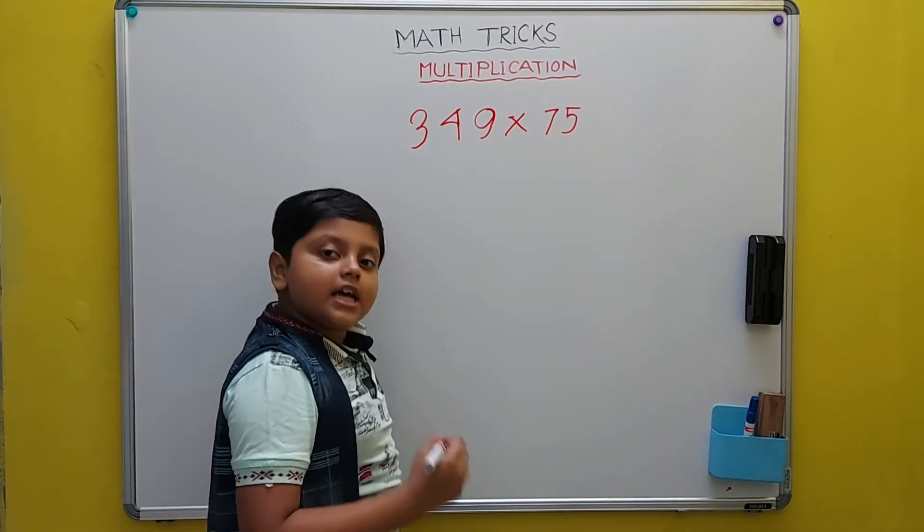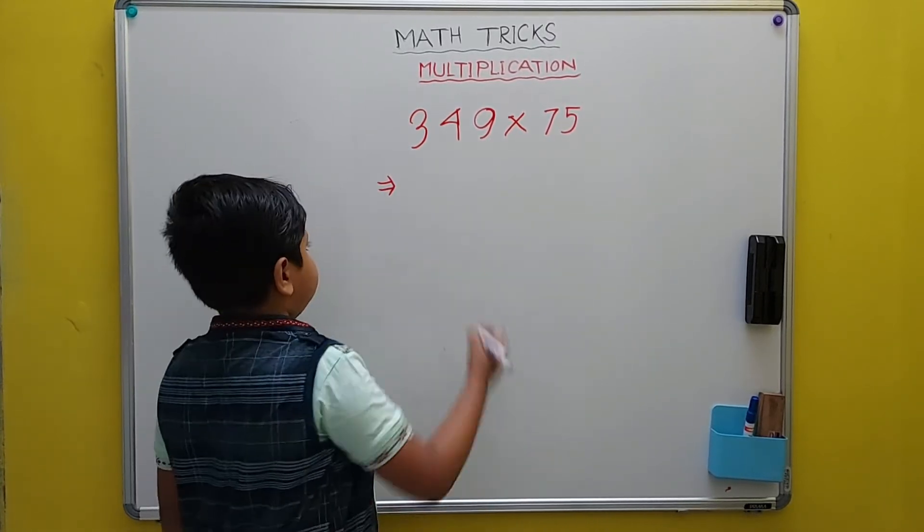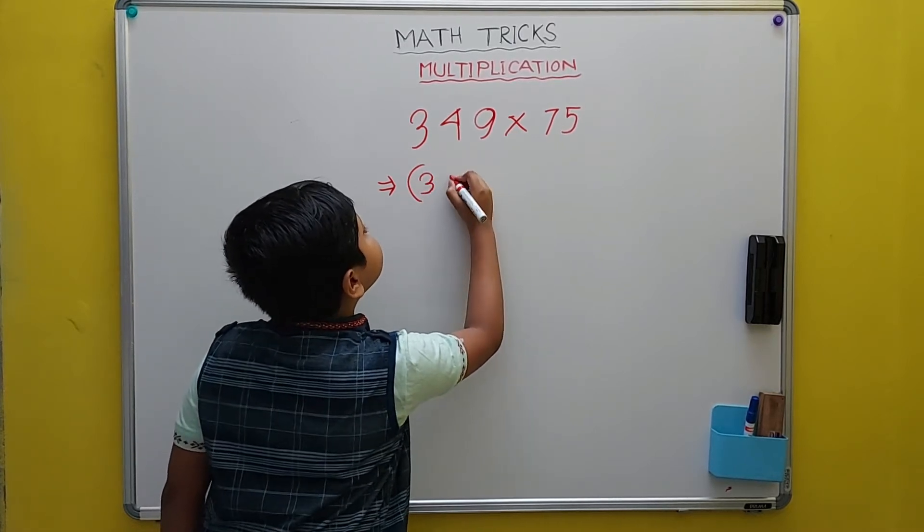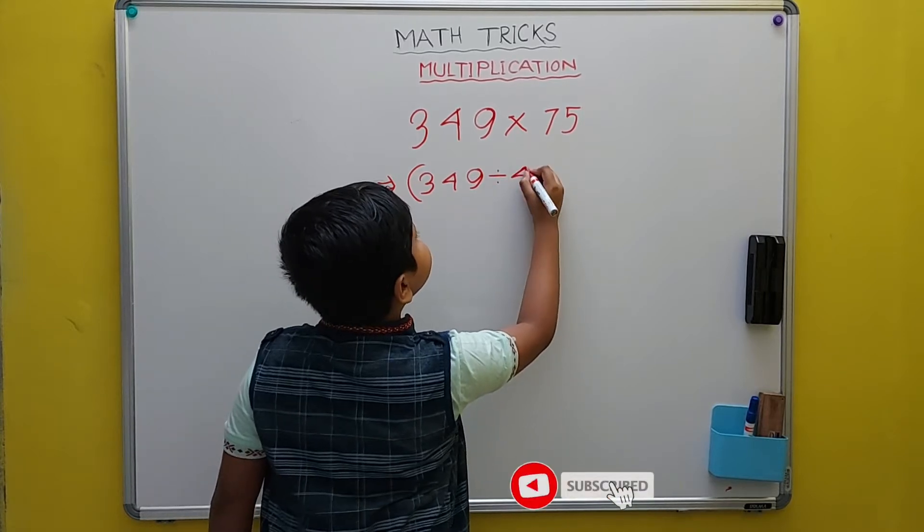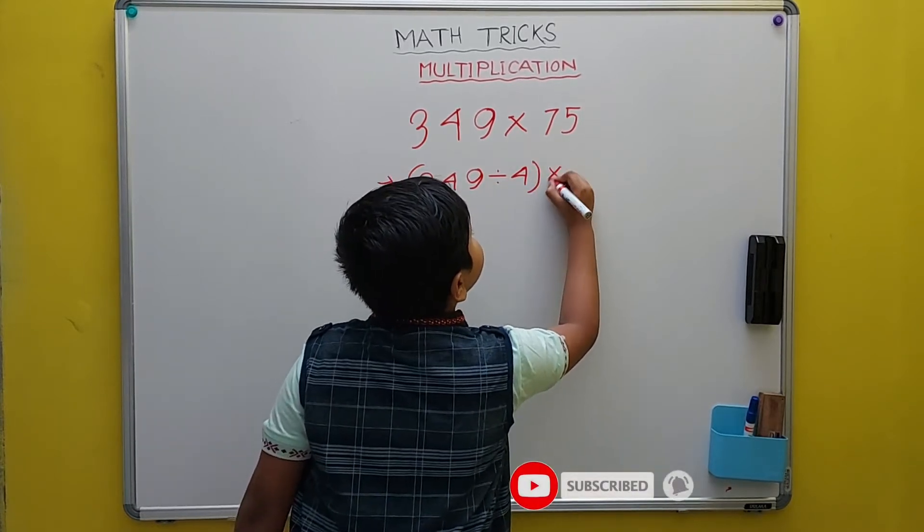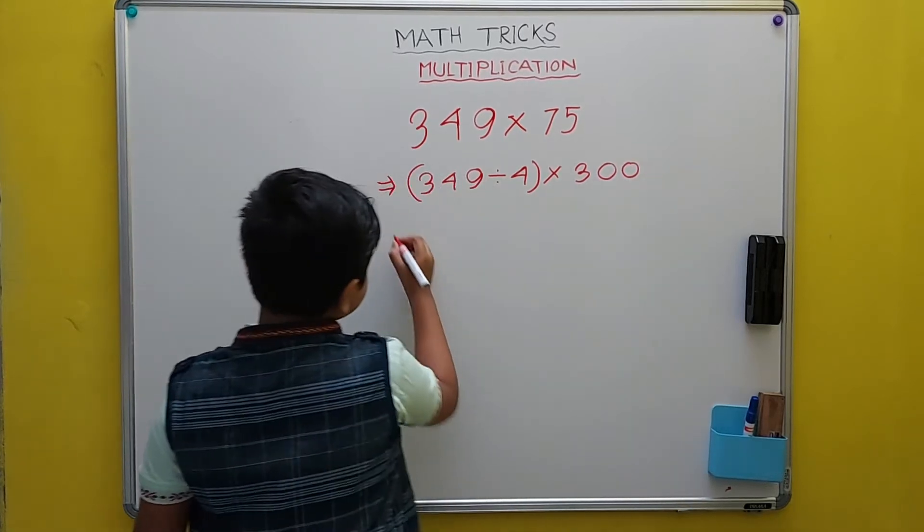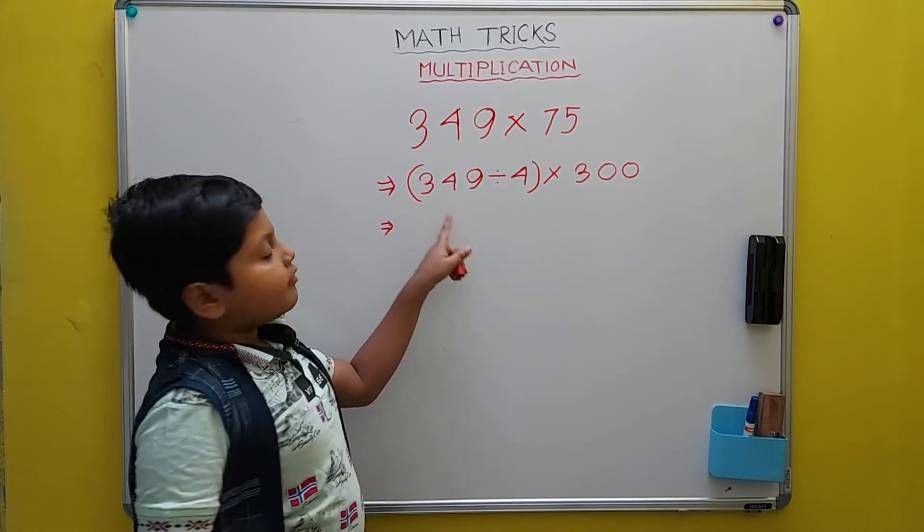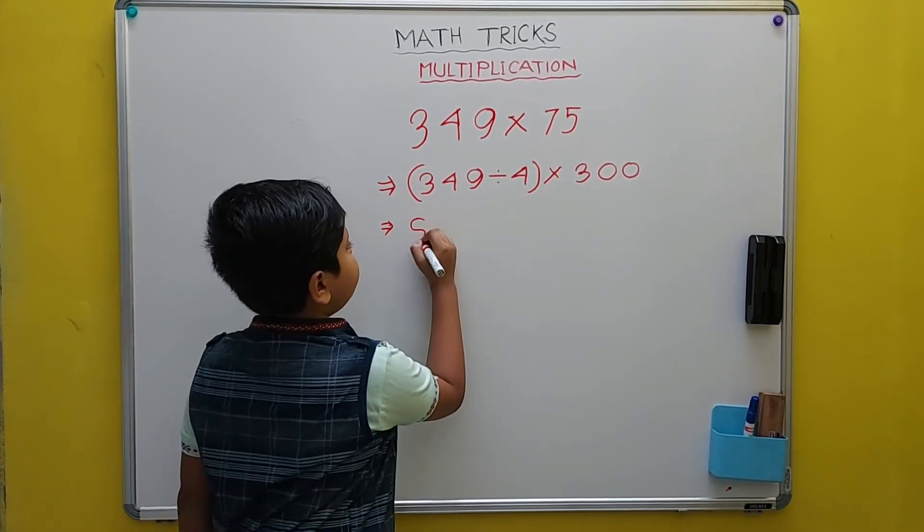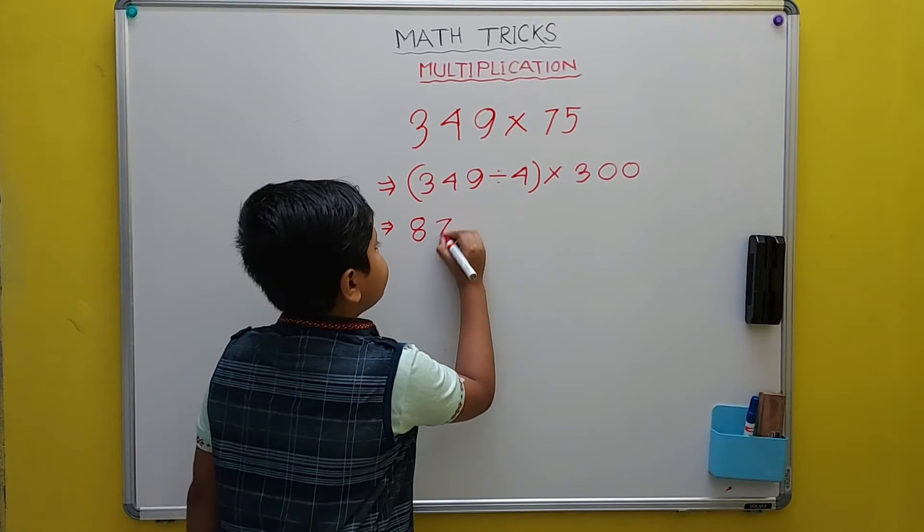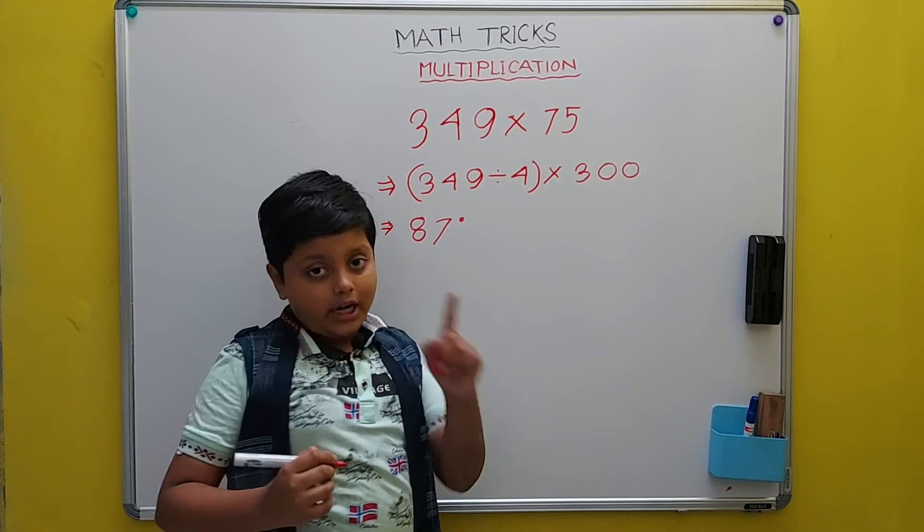It is the same method, but there are decimal numbers here. When we try to do this, it results in 87. But there is a catch: there is a remainder of 1.